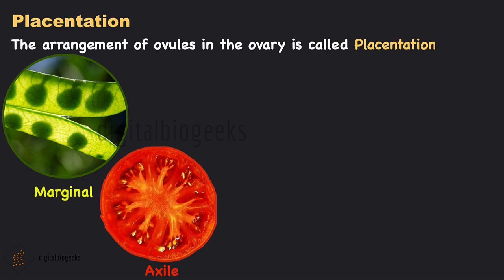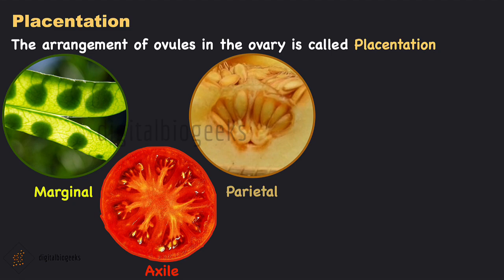In axile placentation, the ovules are arranged on the central axis of the ovary, found in plants with a multilocular ovary — that is, an ovary with more than two chambers. In parietal placentation, ovules are borne on the inner walls of the ovary; the ovary is a single chamber but due to the formation of incomplete partitions called septa, it appears many-chambered — for example, melon.